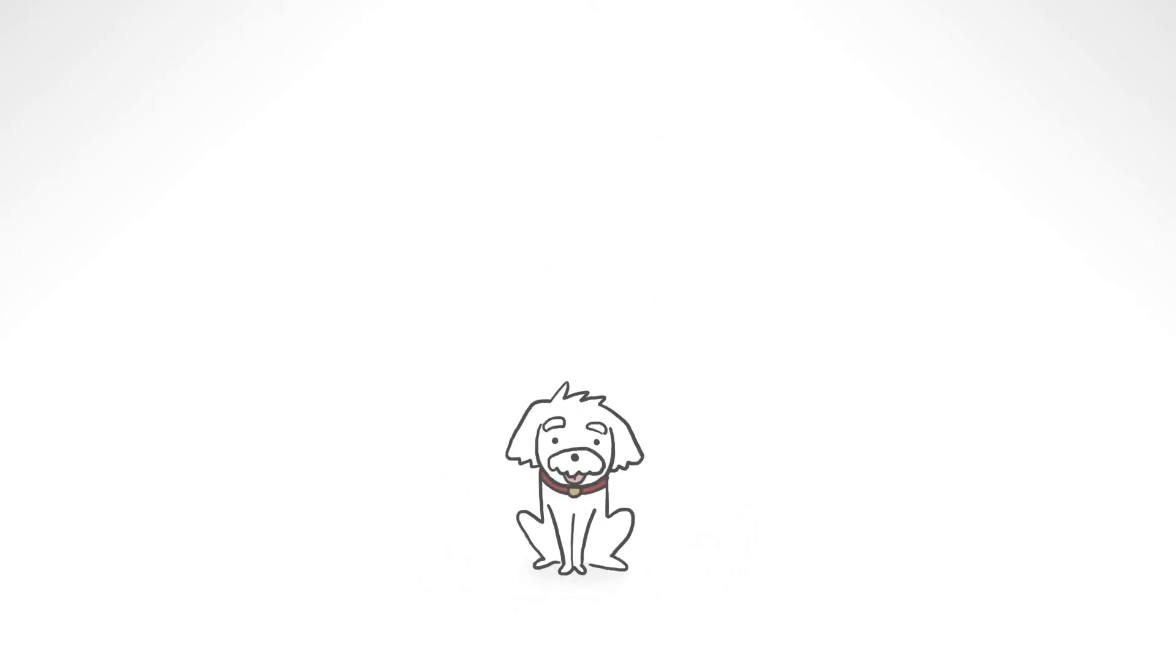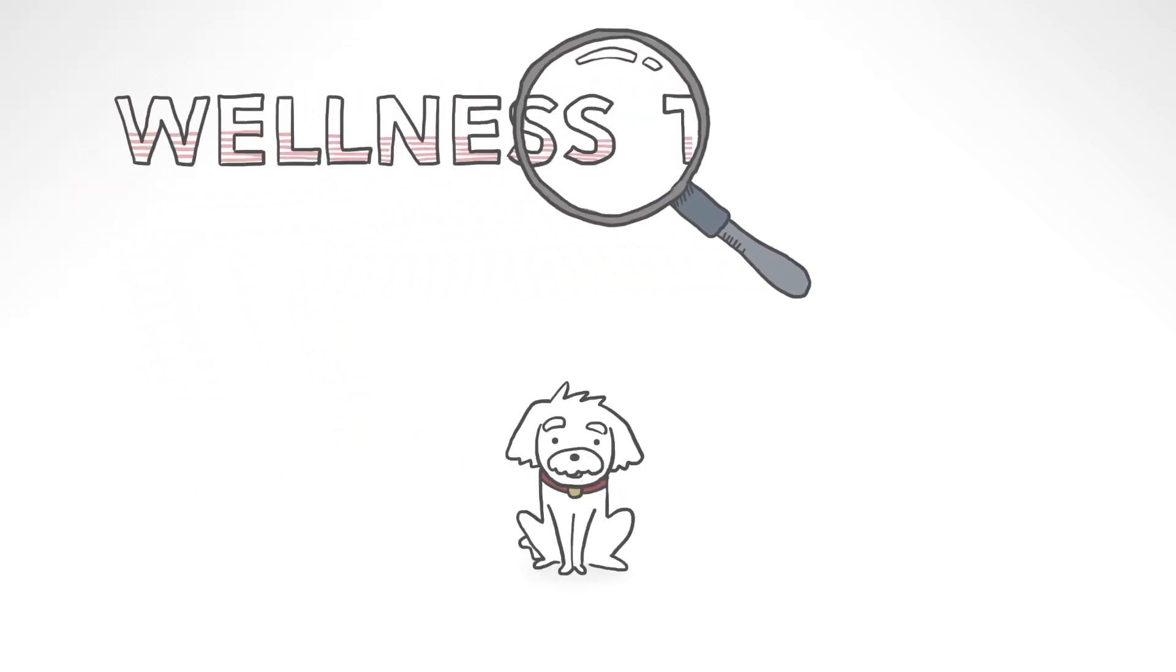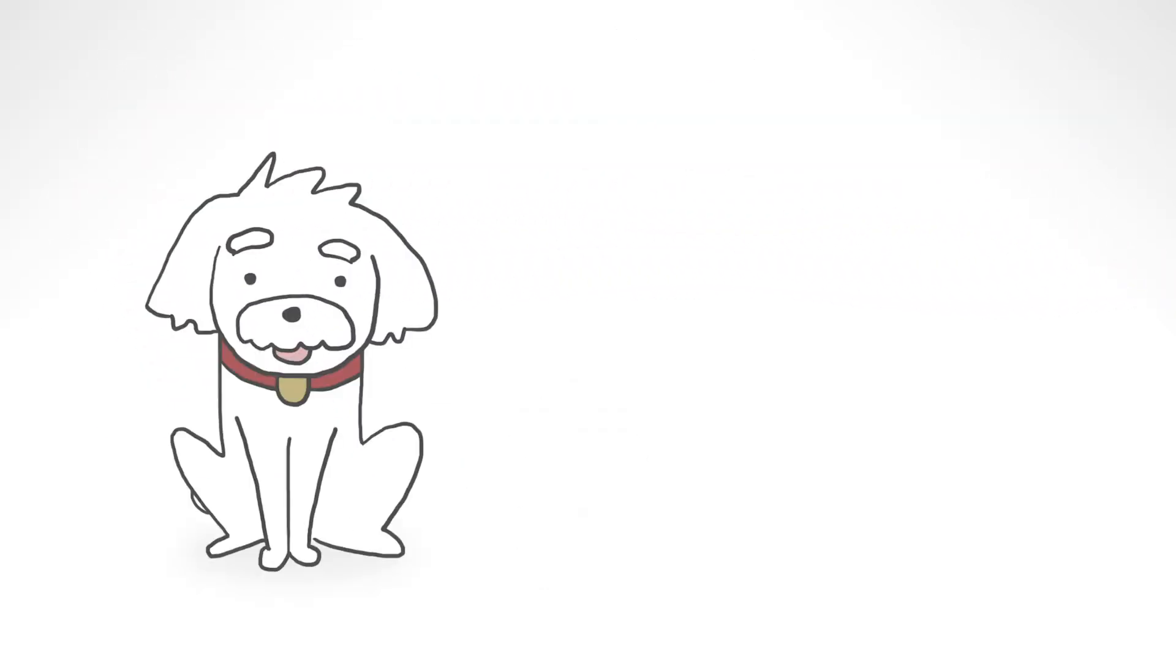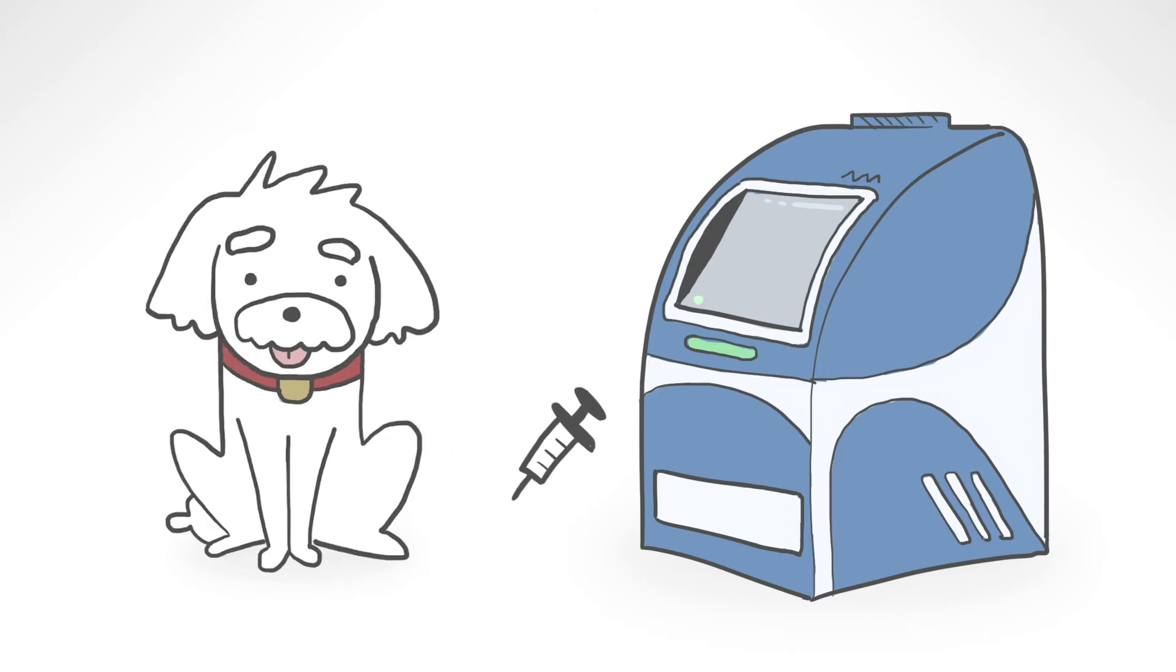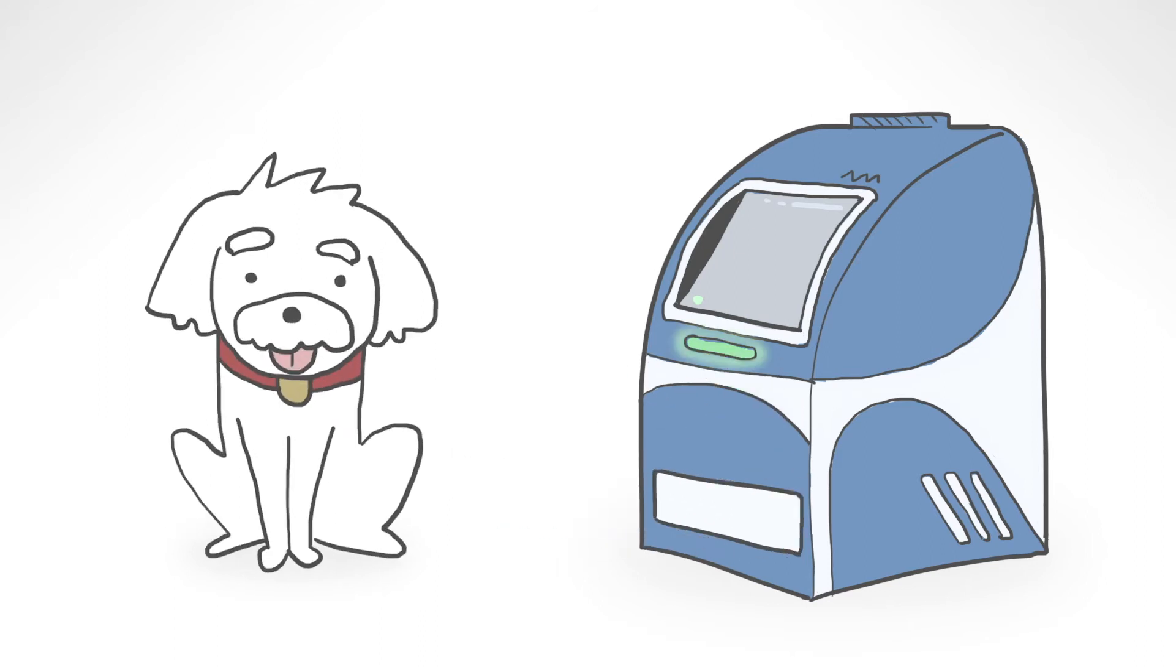There is something you can do to help catch some things early. It's called wellness testing. That's when we take blood, urine, and stool samples and run lab tests to look for illnesses that may not be detected during your pet's physical exam.